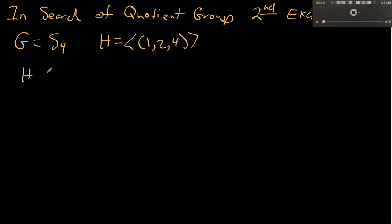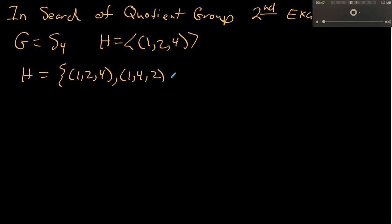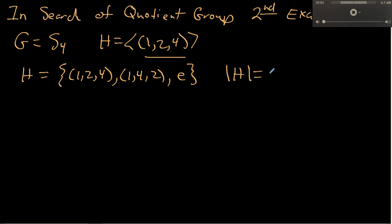If you look at the powers of (1→2→4), you get the permutation itself. When you square that permutation, you get (1→4→2). And because this is a 3-cycle, when we cube it, we just get the identity permutation. So this is our subgroup H, with |H| = 3. The size of S4 is 24.